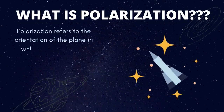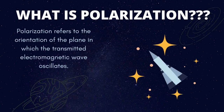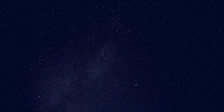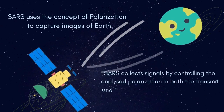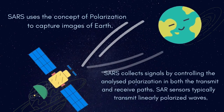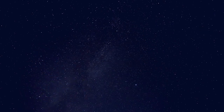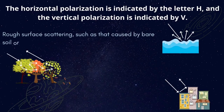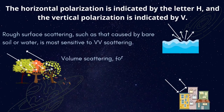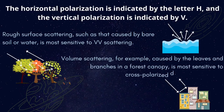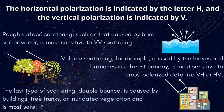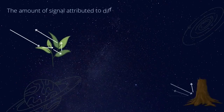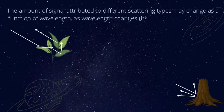Polarization refers to the orientation of the plane in which the transmitted electromagnetic wave oscillates. By using this concept, SAR polarizes the waves to collect signals. Different surfaces scatter light differently and are sensitive to particular types of scattering. For example, rough surfaces are sensitive to VV-type scattering. The amount of signal received may change according to different scattering types.